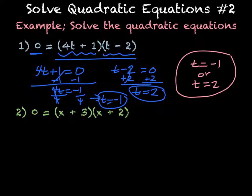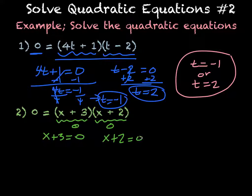For this next problem, same thing. I'm going to set each individual factor equal to 0. So giving me x + 3 = 0, or x + 2 = 0. So then if I'm solving, I'm going to just subtract 3 from both sides, leaving me with x = -3.